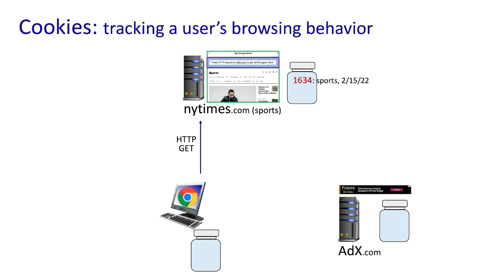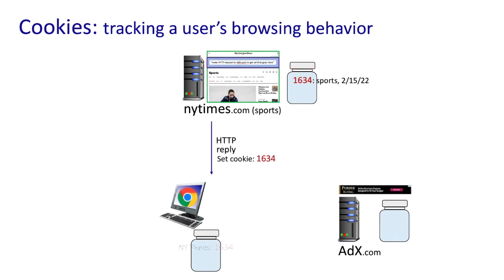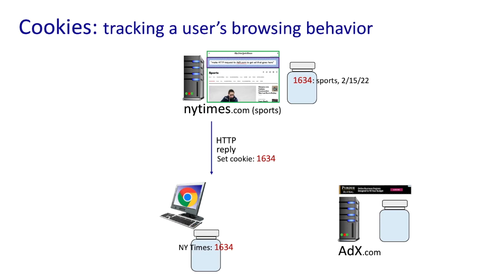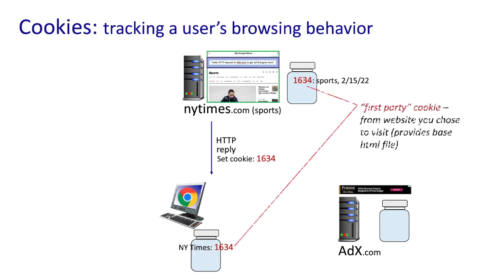When the first HTTP request is received at the New York Times web server, the server creates a cookie with a value of 1634, stores that cookie value in its database — in its cookie jar — along with information such as that a sports page was requested on 2/15/22. When the New York Times server replies, it returns the requested content but also includes a Set-Cookie field in the HTTP reply header with a value of 1634. My browser receives the reply, sees the cookie value of 1634, stores it in its cookie jar, and records that this cookie value is associated with NewYorkTimes.com. This kind of cookie is sometimes called a first-party cookie, since it comes from a site that I explicitly asked my browser to visit.